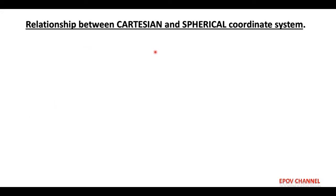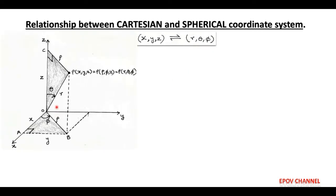Friends, in this session, we are ready to discuss the relationship between the Cartesian and spherical coordinate system, i.e., the transformation between x, y, z and r, theta, phi. As shown in the figure, we consider point P with Cartesian coordinates x, y, z, cylindrical coordinates rho, phi, z and spherical coordinates r, theta, phi.